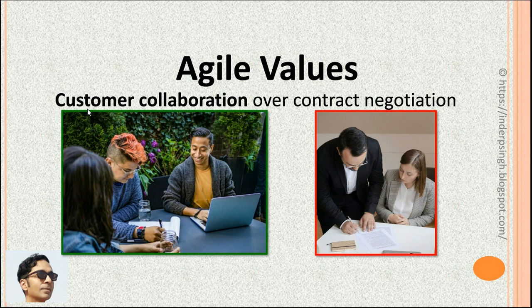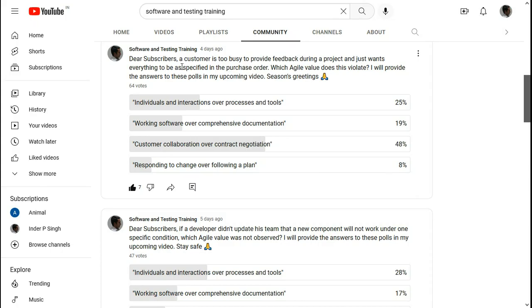The next of the four values of agile is customer collaboration over contract negotiation. In agile project management, the team collaborates with the product owner or the client directly to get the requirements and share updates about the working software, instead of using a detailed contract containing the project scope. This collaboration helps create a culture of trust in the project.